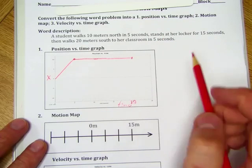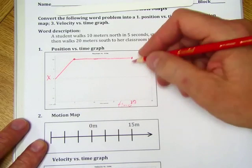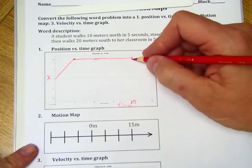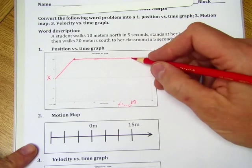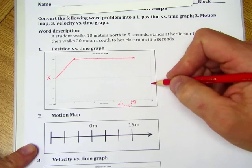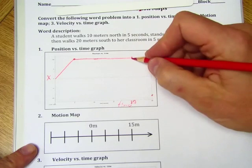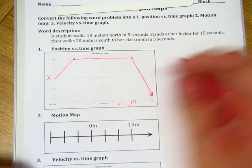Then she walks 20 meters south to her classroom in 5 seconds. So then she comes back in the other direction. So this we're calling north, and this we're calling south. She went 20 meters in 5 seconds. So from 20 to 25 seconds, she went 10 and another 10. So she went down here.